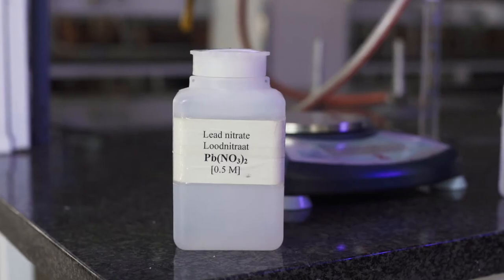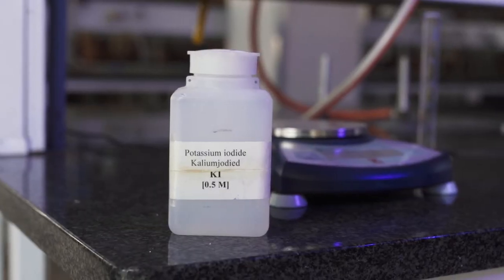The topic of experiment two is stoichiometry. In this experiment, we will perform a precipitation reaction by adding known volumes of lead nitrate and potassium iodide.